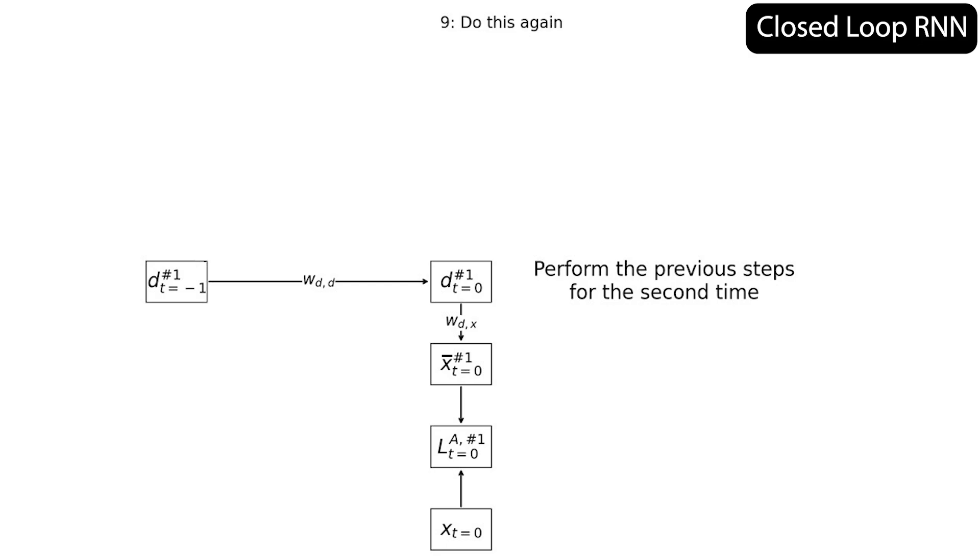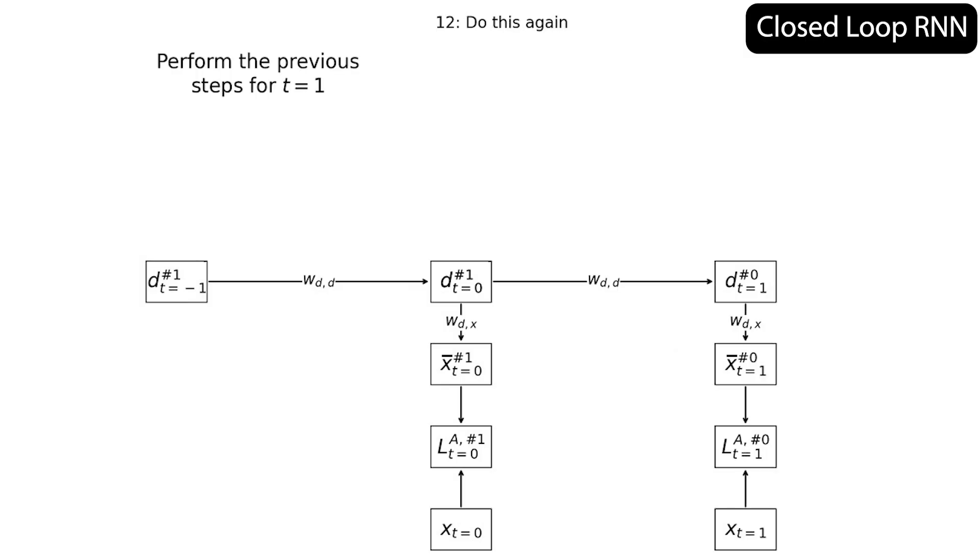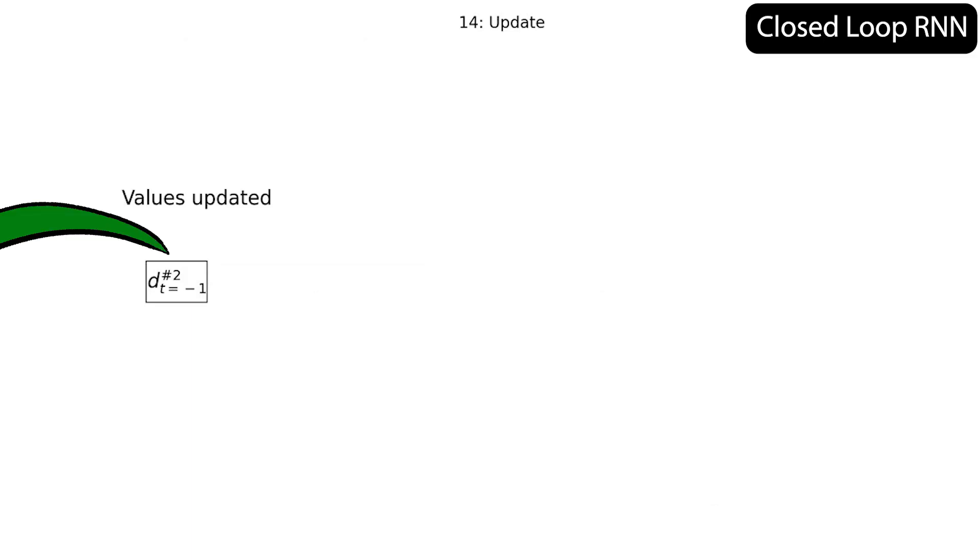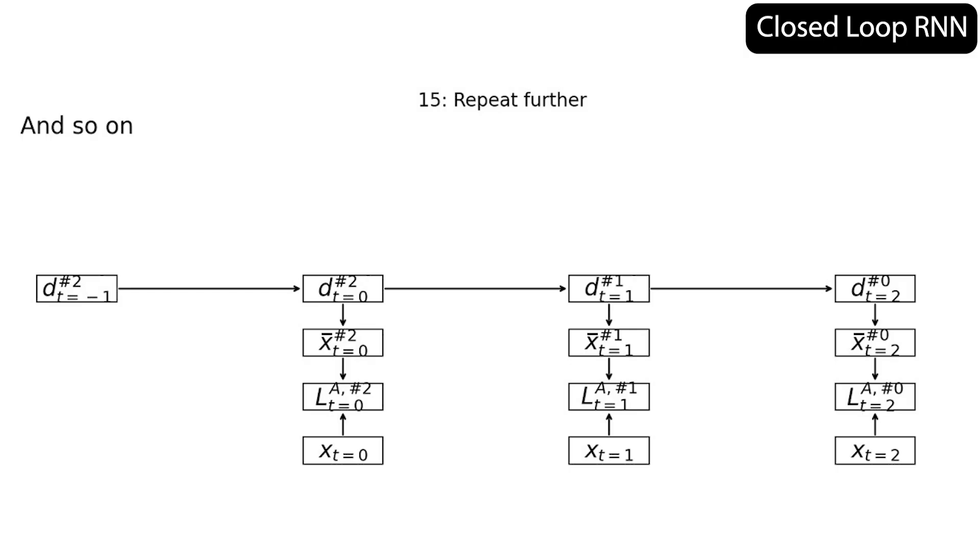So let's move another time step forward. The model uses this updated hidden state at time t equals zero to make this new hidden state at time t equals one. And it uses that to make a new prediction of a new target. This prediction will have another loss value, which back propagates all the way back to this initial hidden state. It's been updated twice now. And now the model goes all the way back to the future where it left off. This hidden state has been updated twice too, and this hidden state is updated for the first time. And so on.